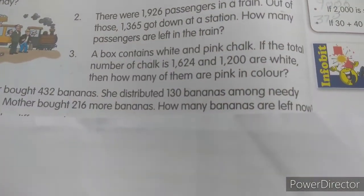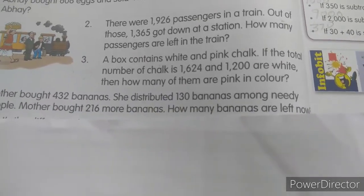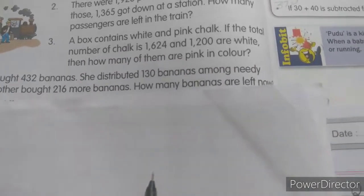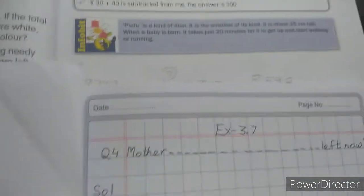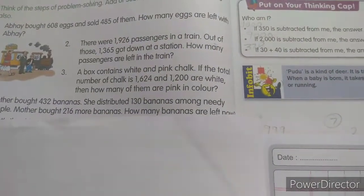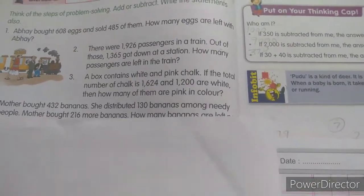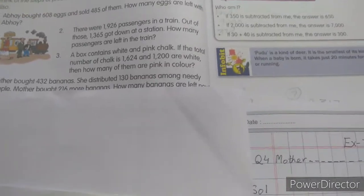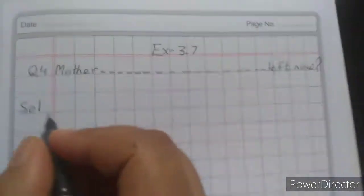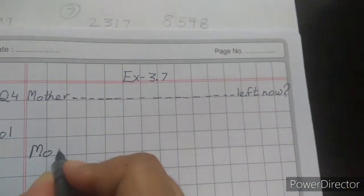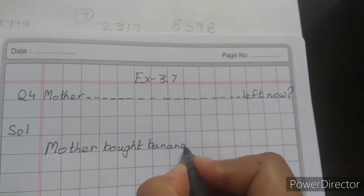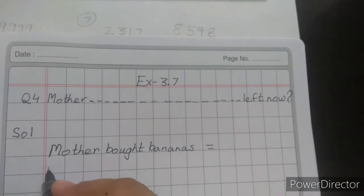It says mother bought 432 bananas. She distributed 130 bananas among needy people. Mother bought 216 more bananas. How many bananas are left now? Now this question has two parts. First, mother will buy bananas, then distribute them, then buy more. So we will subtract first, then add. Let's see how we will do this. First of all we will write: Mother bought bananas equals.